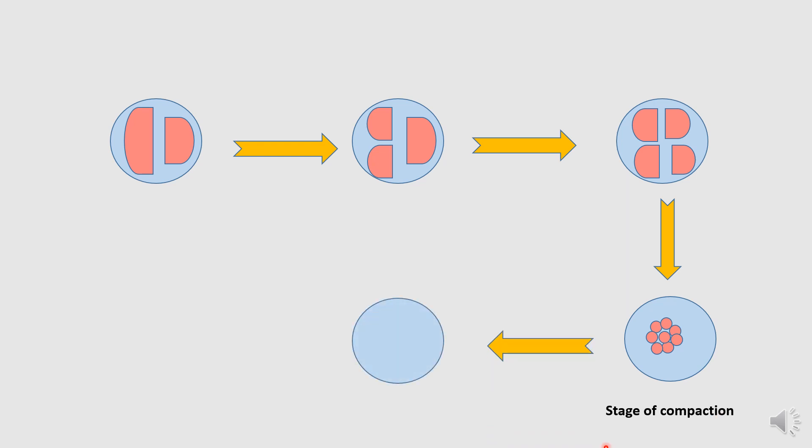From here, they move on to a 16 cell stage. And that is called the morula. Okay, and this stage is called the morula. And you can see here too, the outer cells are more thickly packed and the inner cell mass is loosely packed. And in future, this outer cell will form the trophoblast and the inner cell will form the embryoblast. Is it clear?